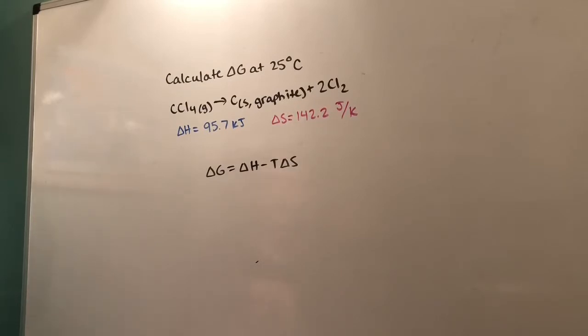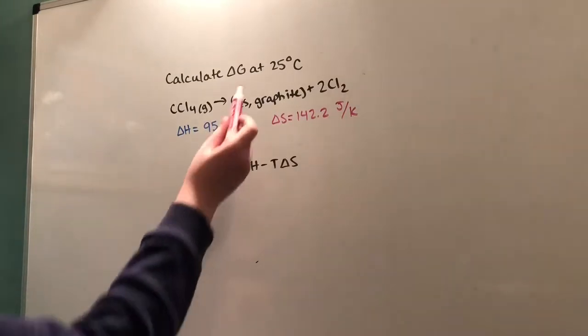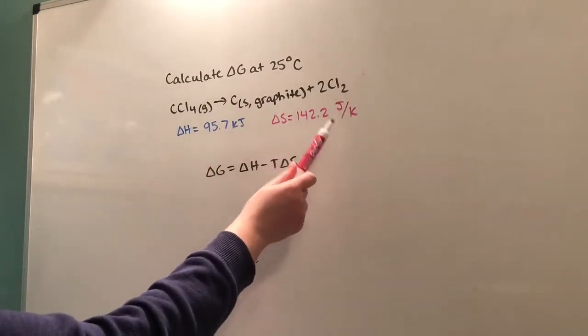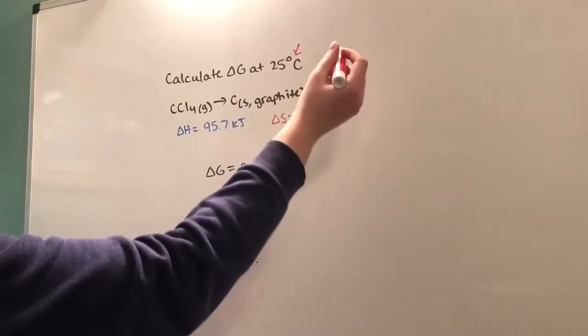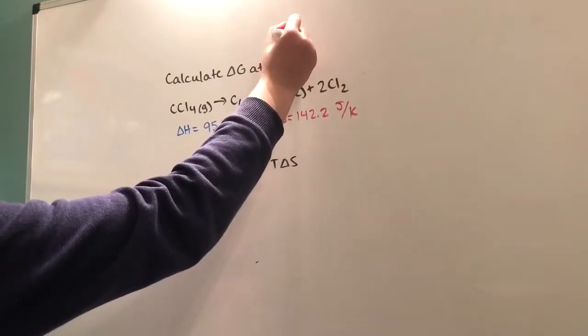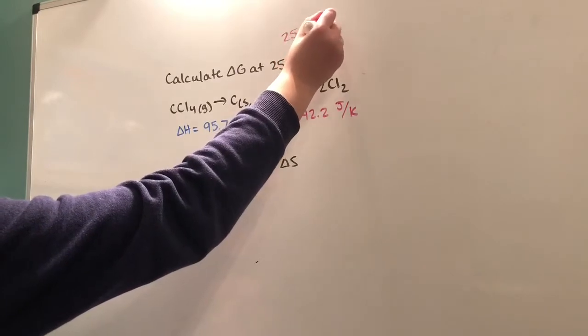The first thing we're going to do is convert the temperature to Kelvin, because when it's multiplied by ΔS you'll be left with joules. To convert to Kelvin, we take 25 and add 273 to it, which gives us 298 Kelvin.